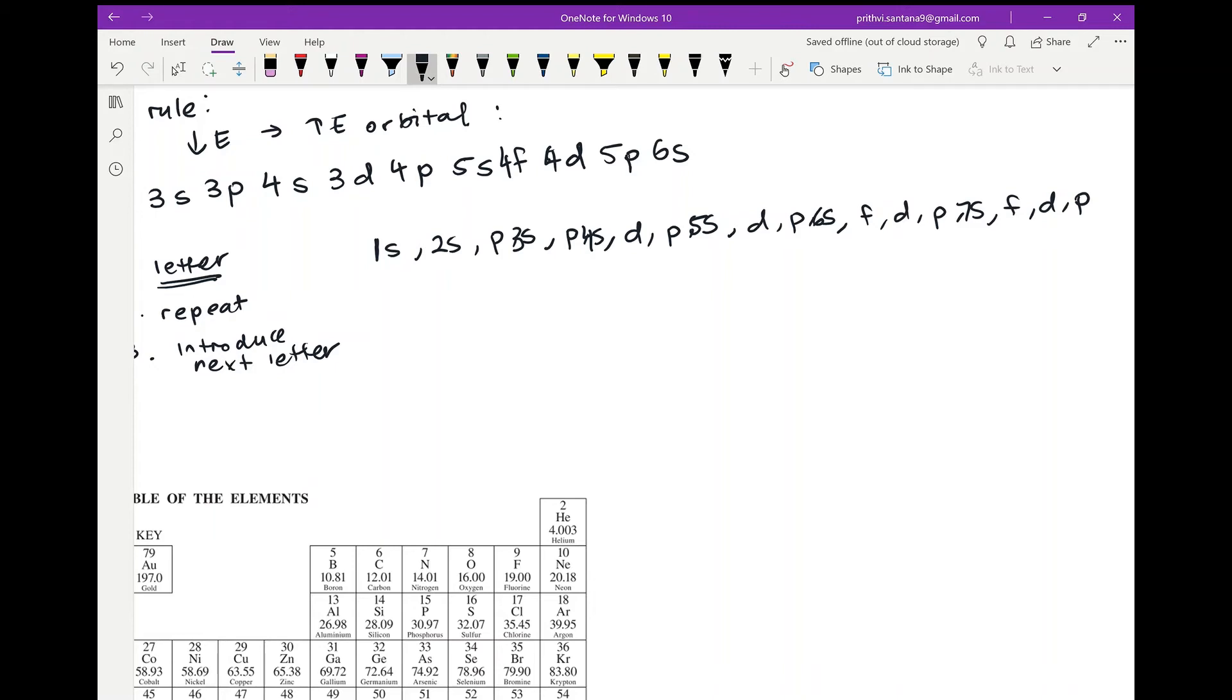And for the P suborbital, I should know the P suborbital starts at the second energy level. So the first P I see, I will put a 2 in front of it. And then for every subsequent P, I will go up by 1. Like this.